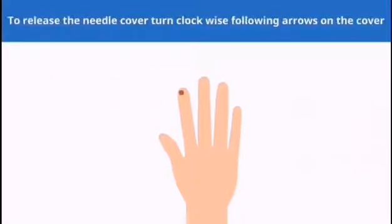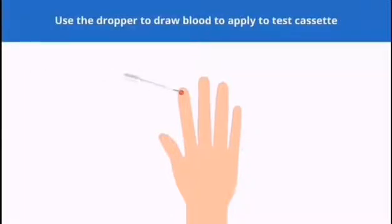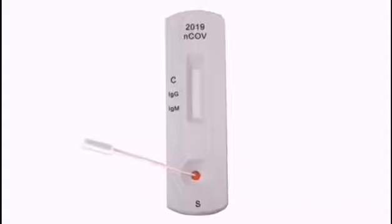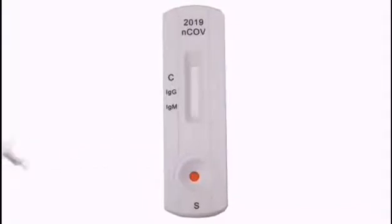To release the needle cover, turn clockwise, following arrows on the cover. Then use the dropper to draw blood to apply it to the test cassette. From the dropper, add two drops of blood to the cassette marked test. Then add two drops of buffer to the cassette marked test.